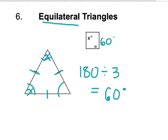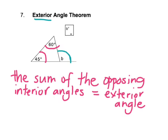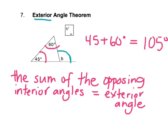This is X, this is also X, and this is also X. The exterior angle theorem states that an exterior angle is on the outside of the shape. The sum of the two opposing interior angles equals the exterior angle. So we simply add 45 plus 60 degrees, which equals 105 degrees, meaning B equals 105.